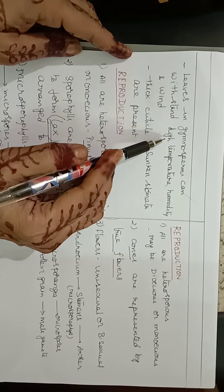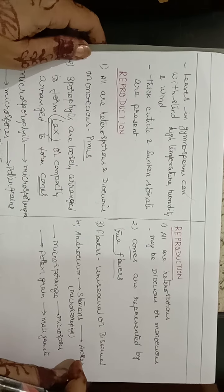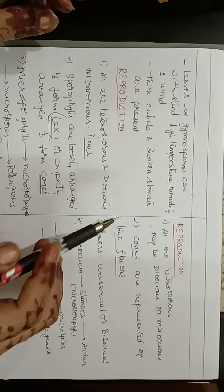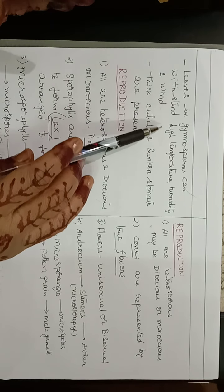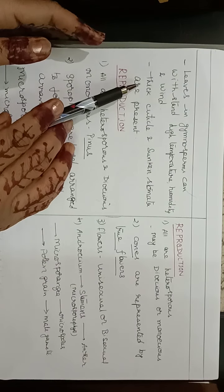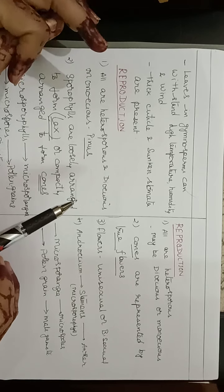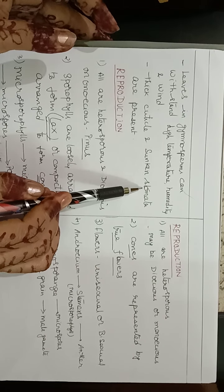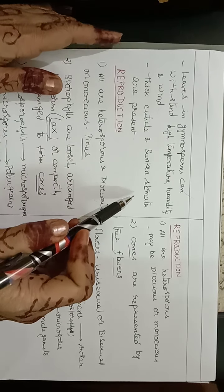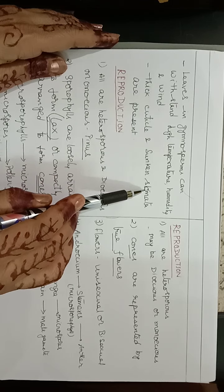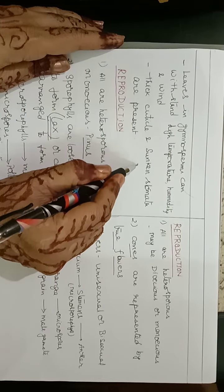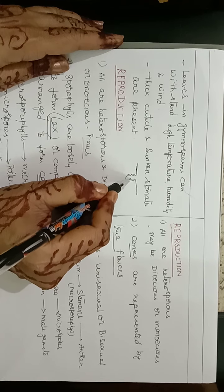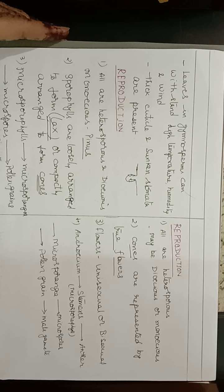In gymnosperms, leaves can withstand high temperature, humidity, and wind — a xerophytic character. They also show thick cuticle and sunken stomata, which are also xerophytic adaptations. Sunken stomata open deep inside a cavity formed by the epidermis, unlike normal stomata which open outside.